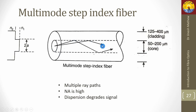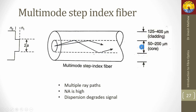Multi-mode step index fiber: multiple ray paths with different angles of incidence are present. Core radius is approximately 50 or 62.5 micrometers and cladding diameter is 125 micrometers. Numerical aperture is high. Dispersion degrades the signal because different ray paths cause light rays to reach the other end at different times, causing pulse broadening.